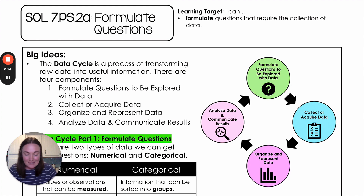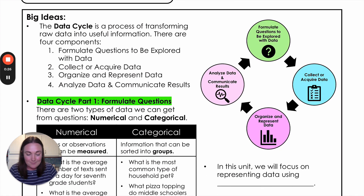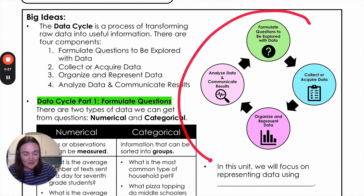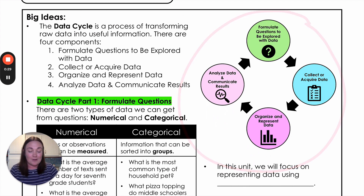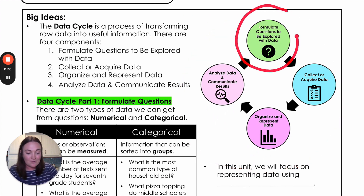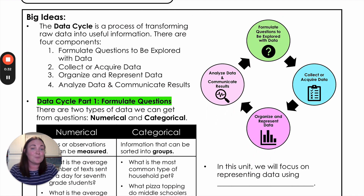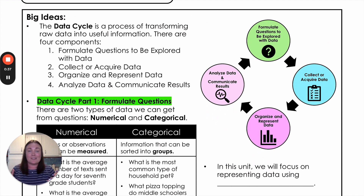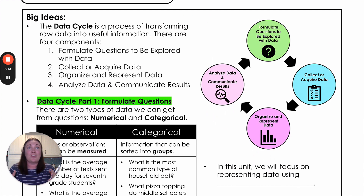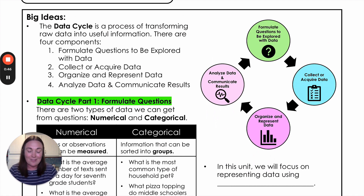The data cycle has these four big steps, and we kind of got it in this chart right here. Today we're going to focus on the first one, which is to formulate questions to be explored with data. A lot of times the data cycle starts with a problem — there's some kind of question we want answered — so the first thing is we have to figure out the right question to ask to answer whatever specific problem we have, and we'll talk about that a lot today.